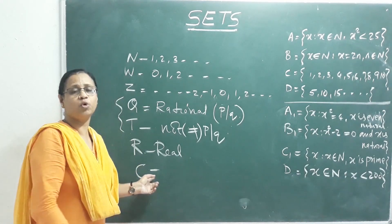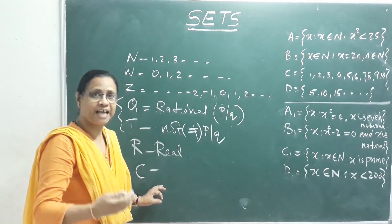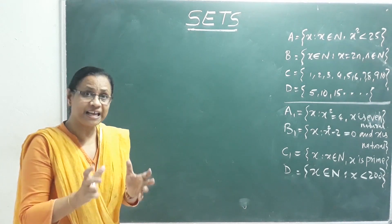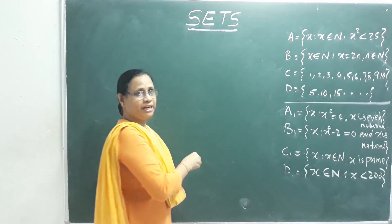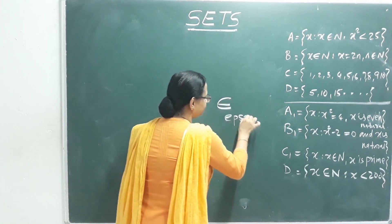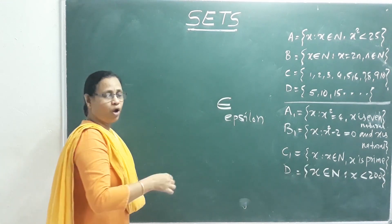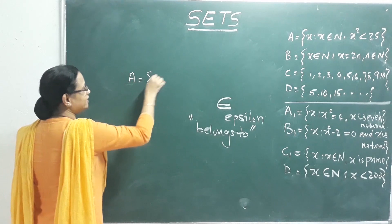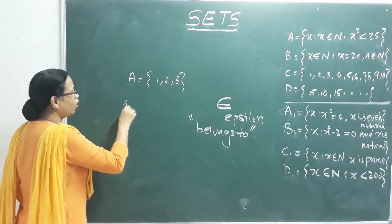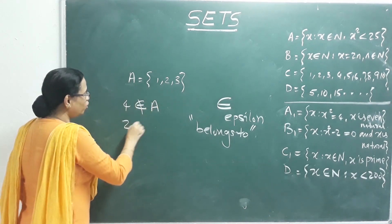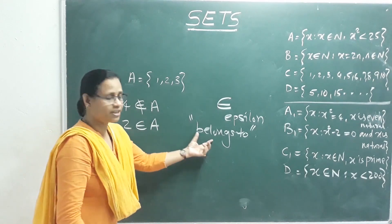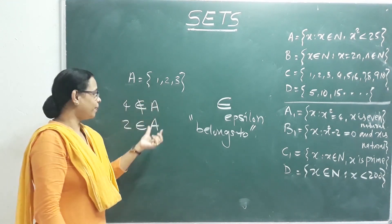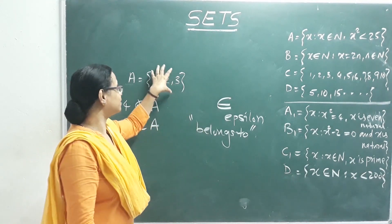Imaginary numbers combined with real numbers form complex numbers. We also learn the notation epsilon (∈), which means 'element of' or 'belongs to.' For example, if A = {1, 2, 3}, then 2 ∈ A (2 belongs to A), but 4 ∉ A (4 does not belong to A).